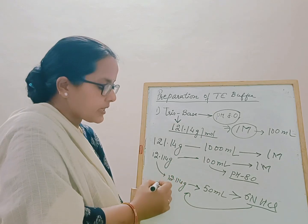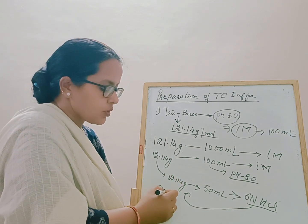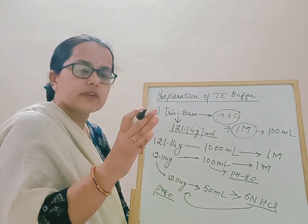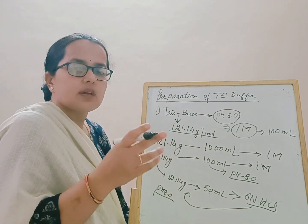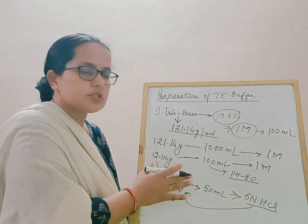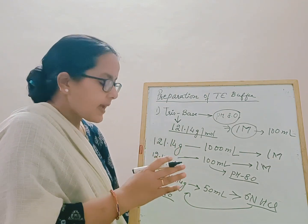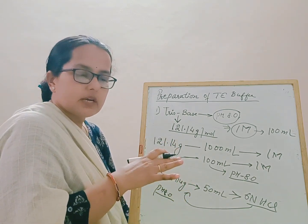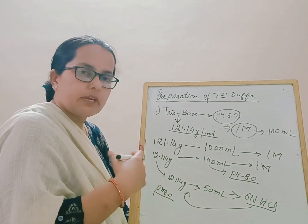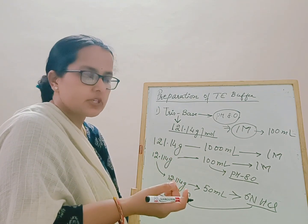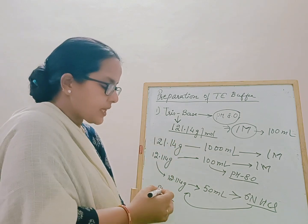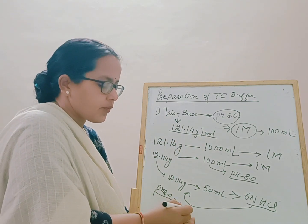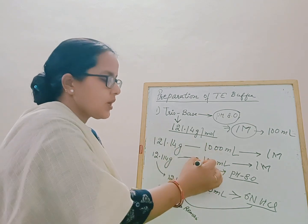When the pH is very close to 8, leave the solution for 1–2 hours or even overnight. Keeping the solution overnight allows the ions to distribute uniformly, and you will get the correct and stable pH. Once your pH is confirmed at 8, make up the remaining volume to 100 ml.